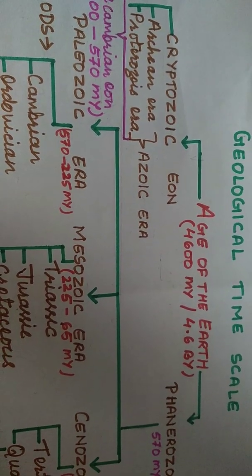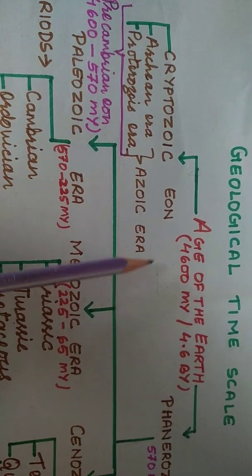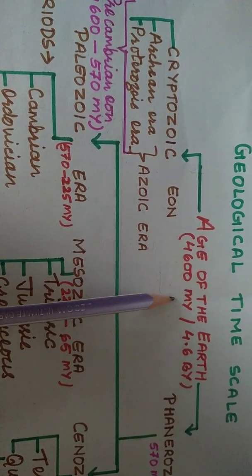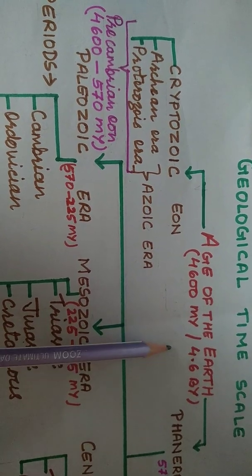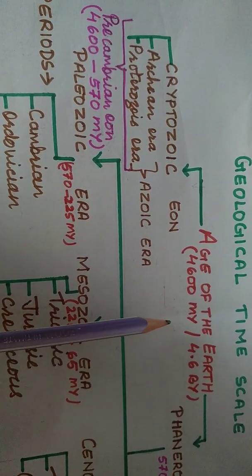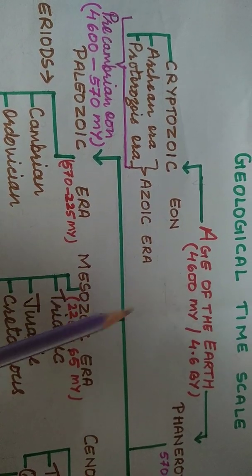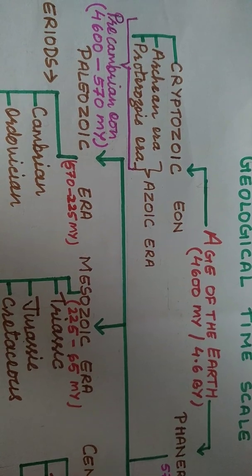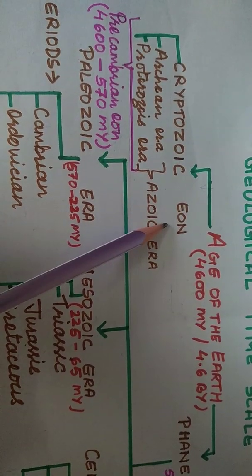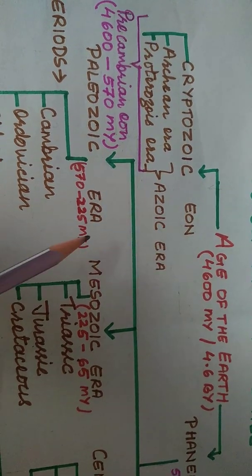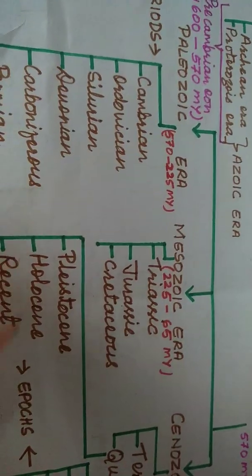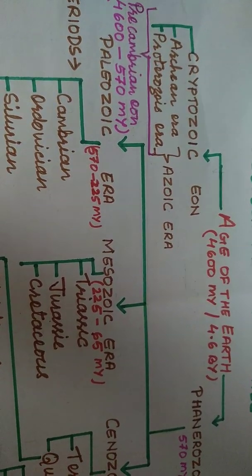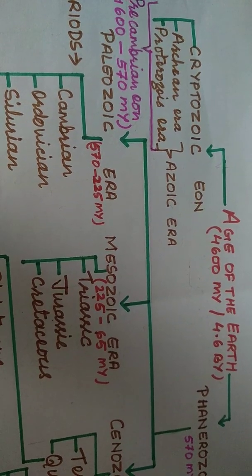The age of the Earth is 4600 million years, or 4.6 billion years. This long time period is divided into divisions to make it easy to study. The largest division is Eon. Eon is divided into Eras, Eras are divided into Periods, and Periods are divided into Epochs. So the hierarchy is: Eon, Era, Period, Epoch — these are the time divisions, also called time intervals or time blocks.